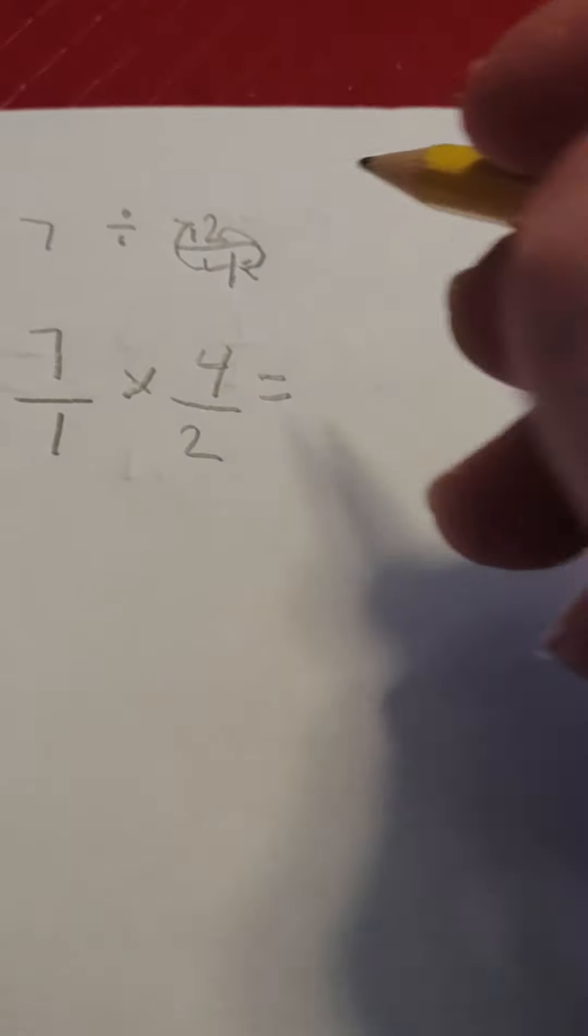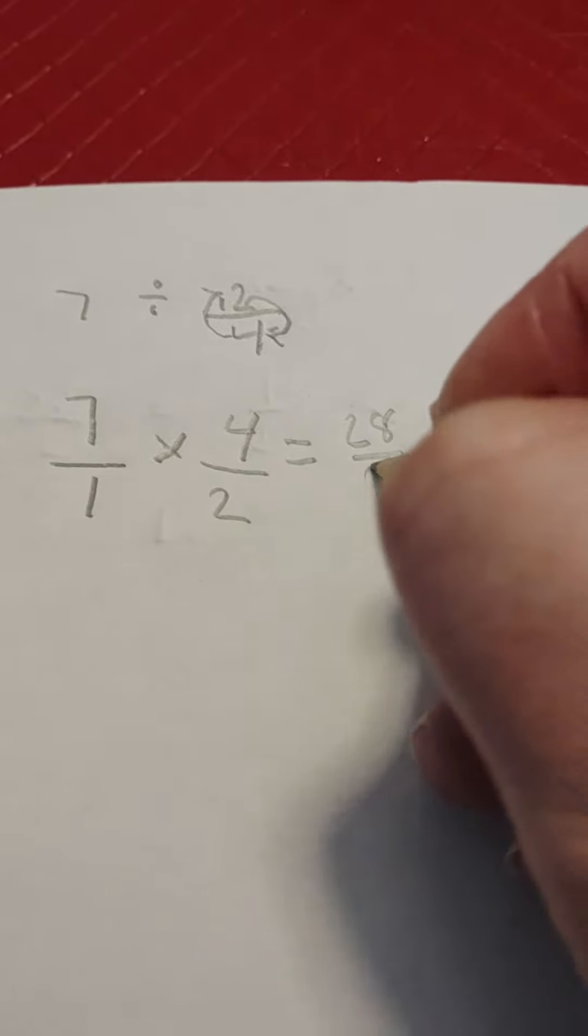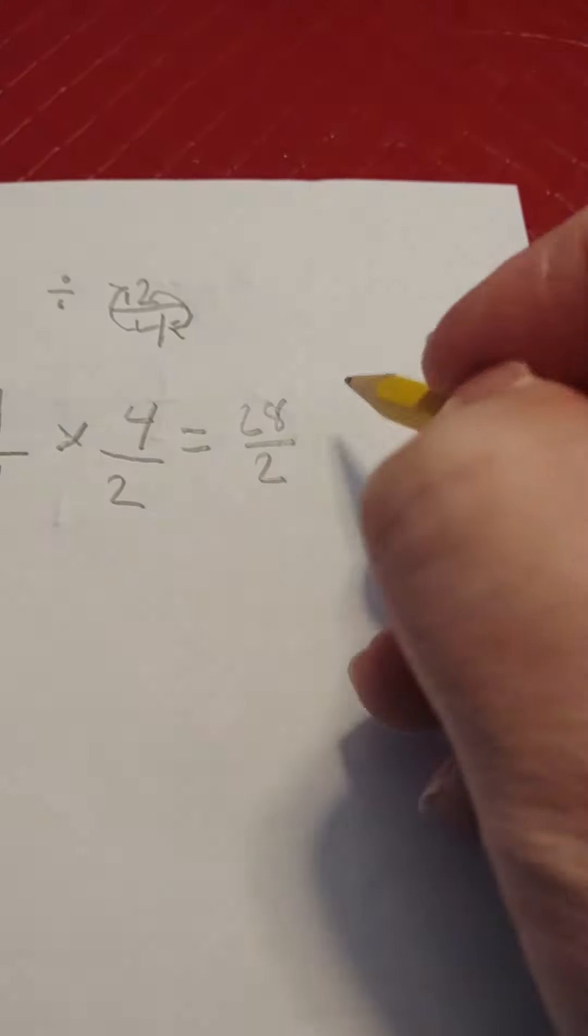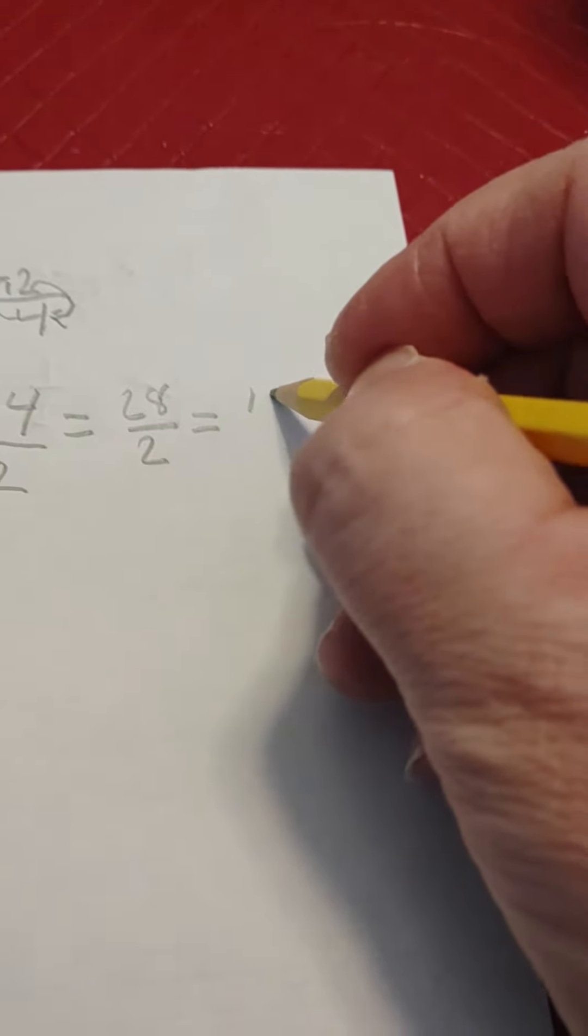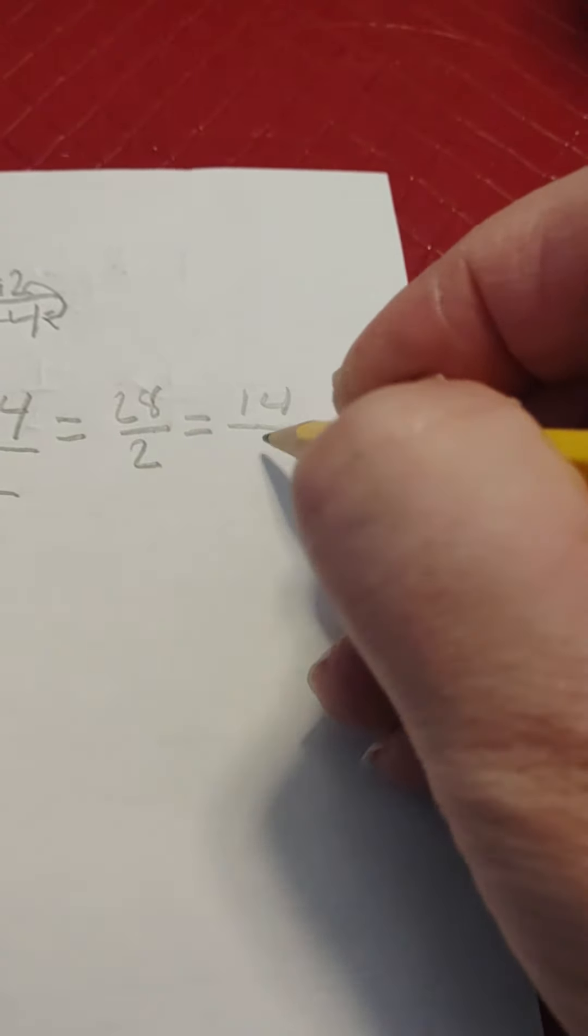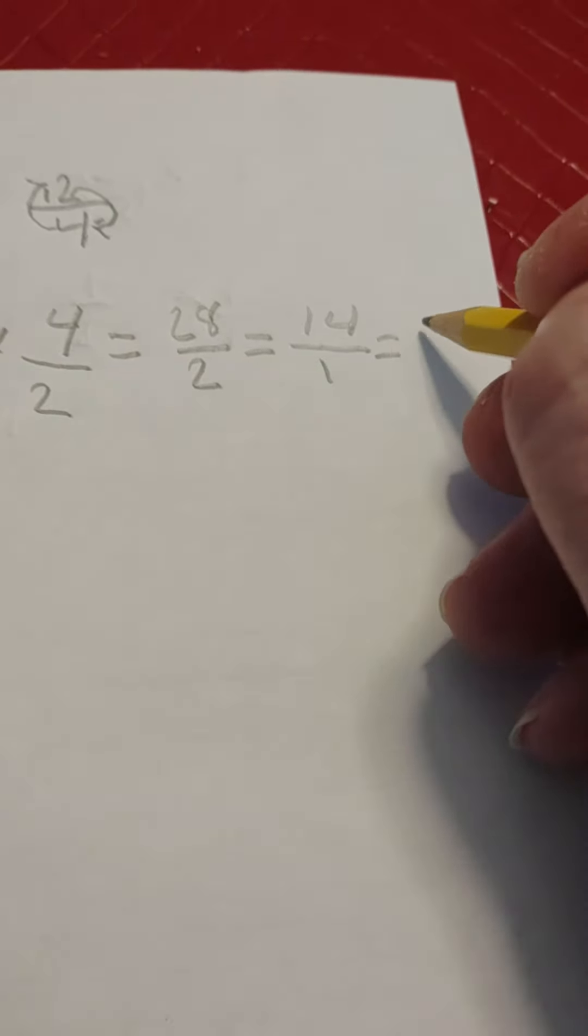All right, so now we have 28 over two, okay, or if we reduce it, you can divide by two, and it's 14 over one, or it's 14.